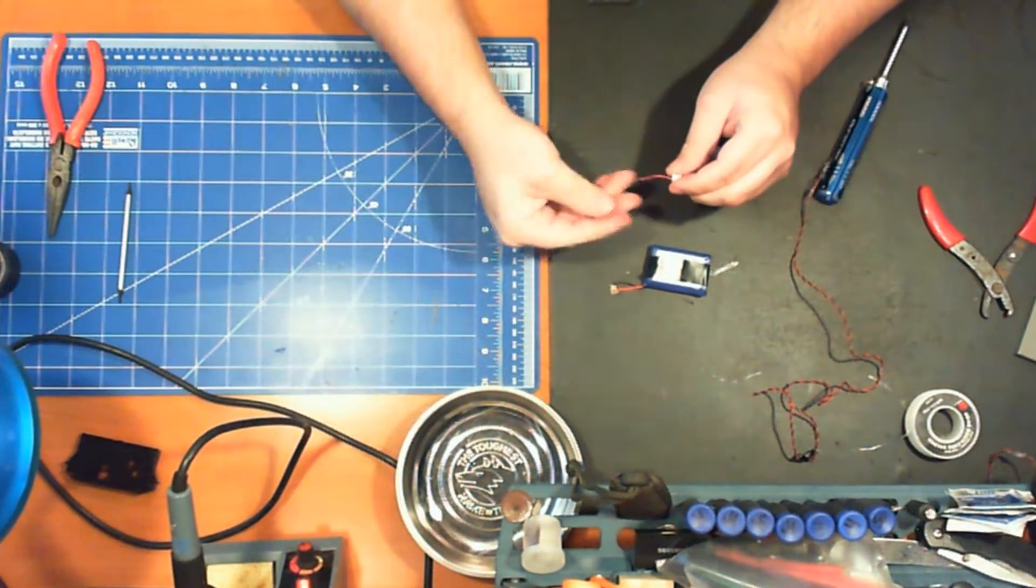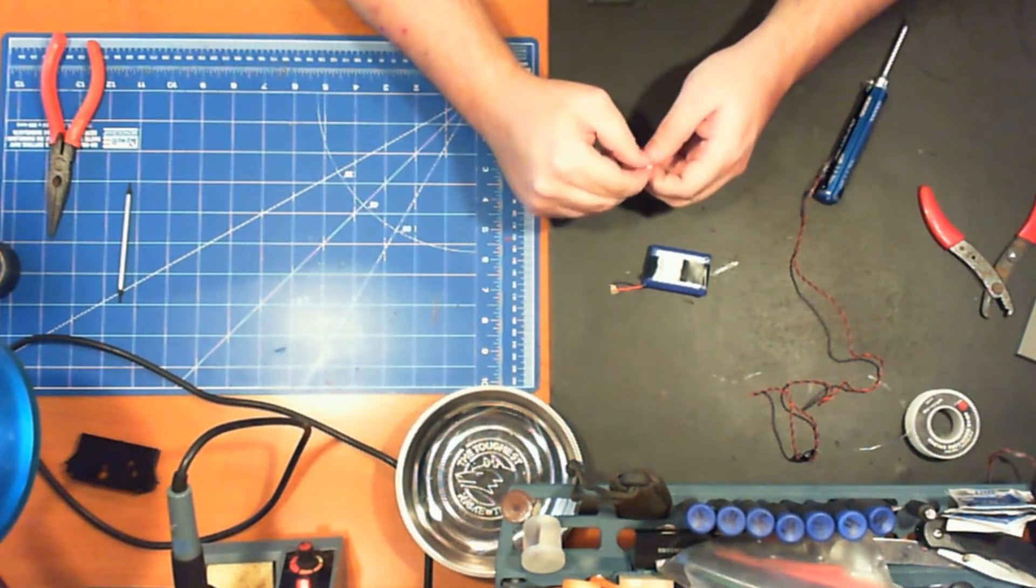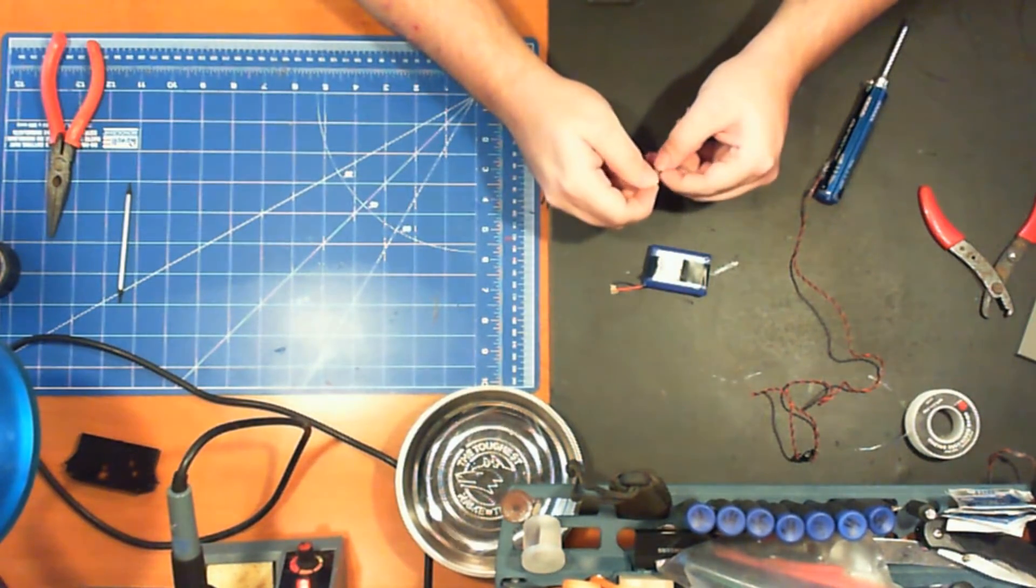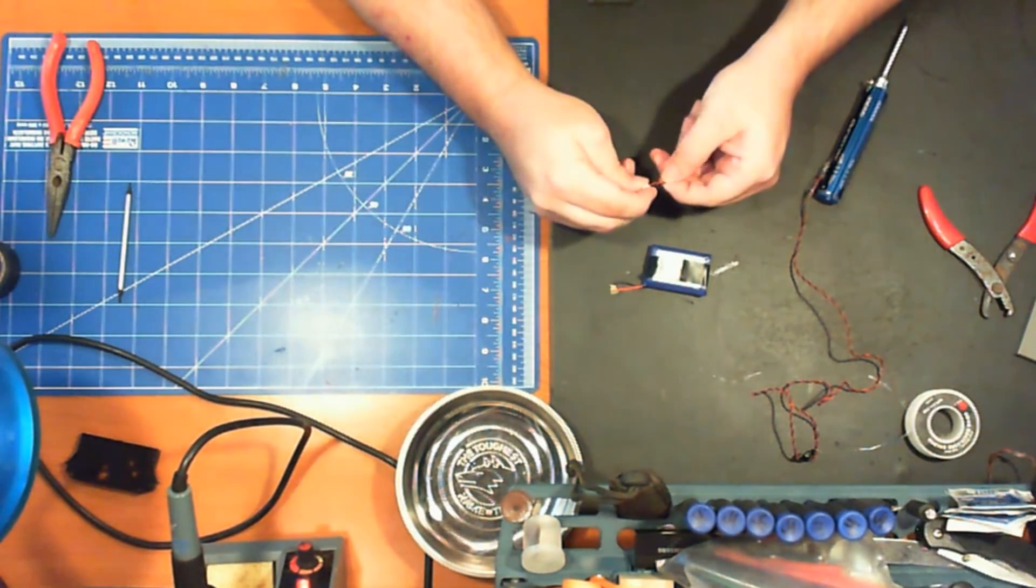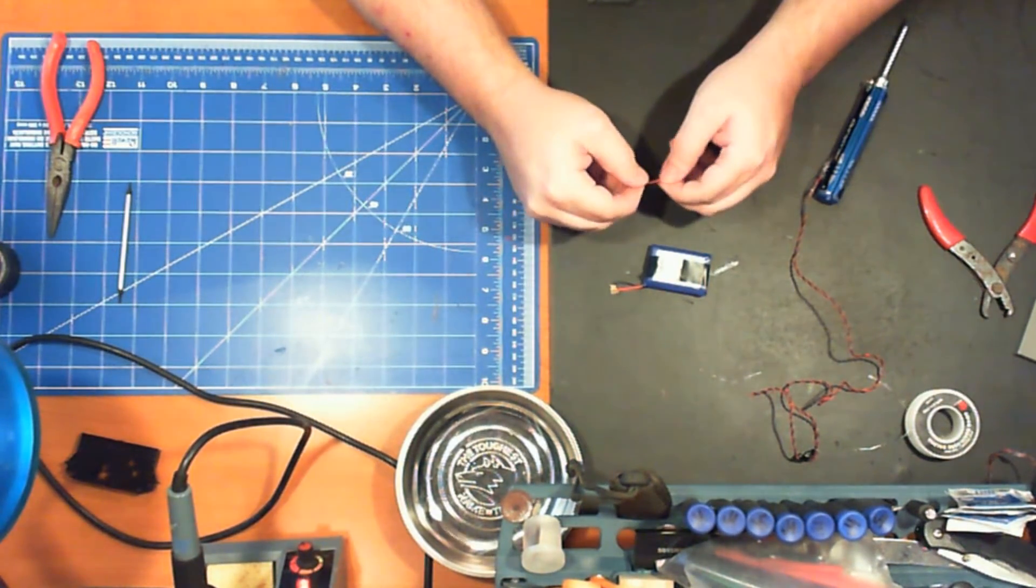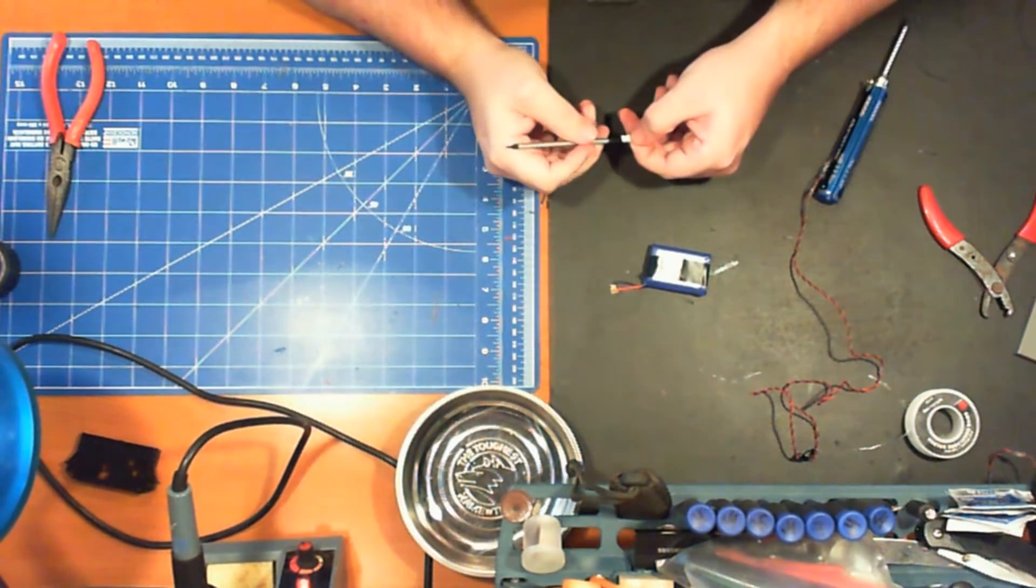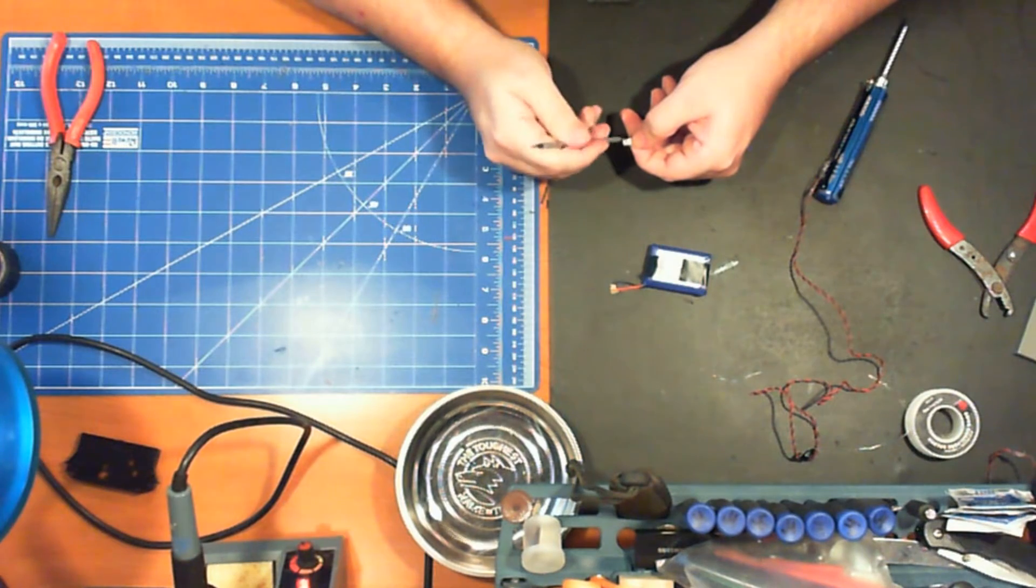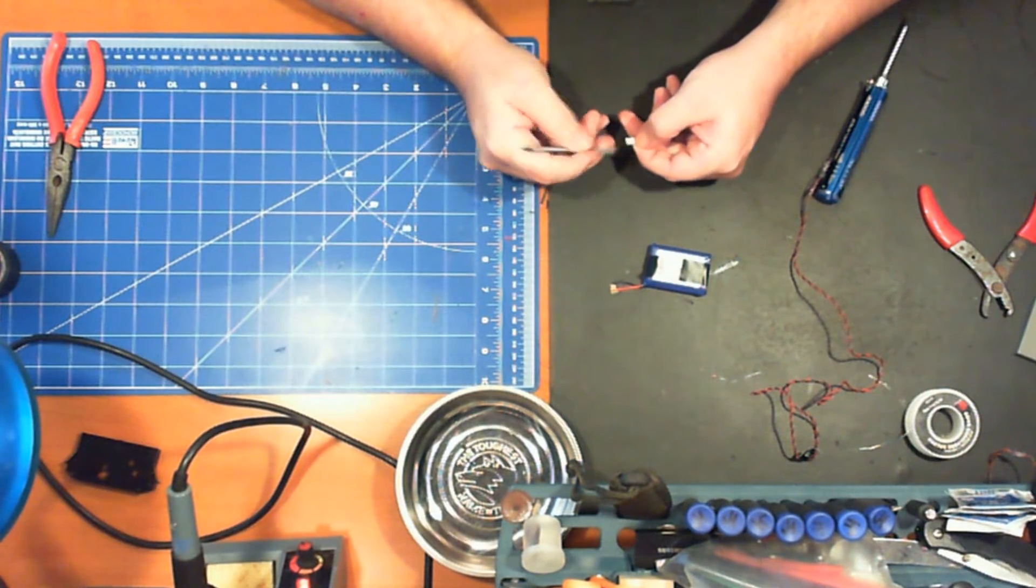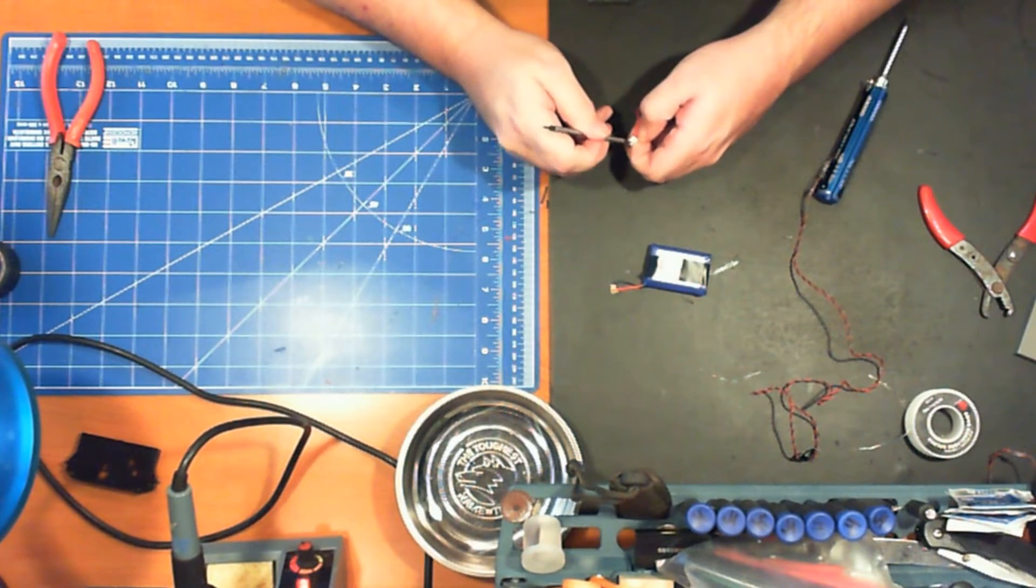Now, one important thing to note when you order your connector, you're going to want to check it against your original battery. It just so happens the JST connectors that I'm using, the red and black pins are swapped. So I actually have to swap them around or solder them the opposite colors. I'm choosing to swap them around just so the colors remain correct.